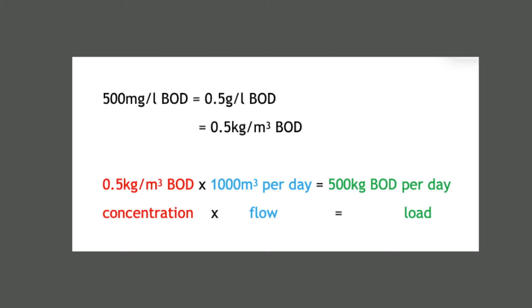By way of example, one litre of sewage containing 500mg per litre BOD has a mass or load of 500mg, equivalent to 0.5g of BOD.